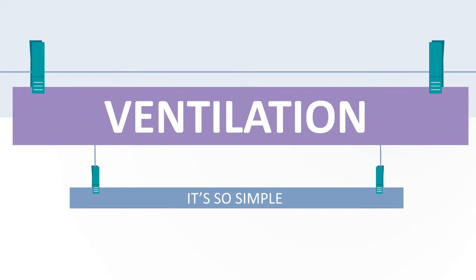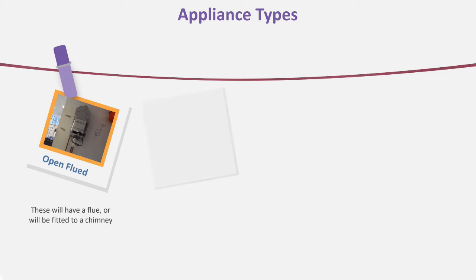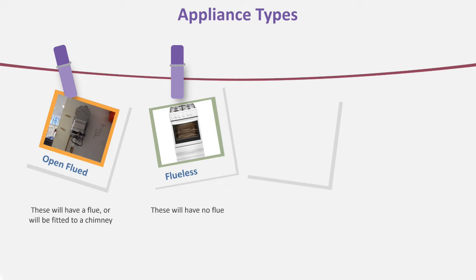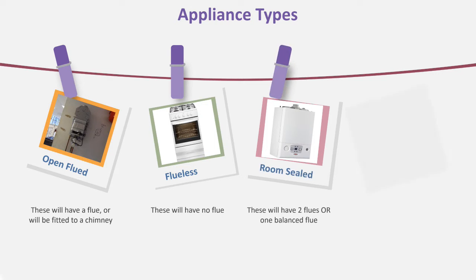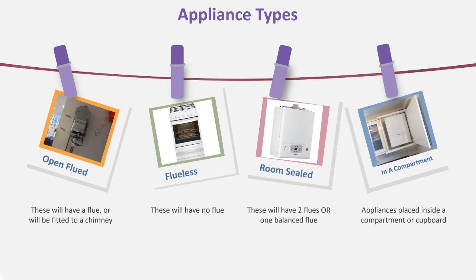In this video we're going to talk about ventilation and you're going to learn four basic steps to remember how to ventilate any appliance — it's a lot easier than you think. There are four types of appliance with regard to ventilation: the first type is open flued, the second type is flueless, the third type is room sealed, and lastly you've got appliances in a compartment. When you're looking to calculate the ventilation for any appliance, you must put it in one of these categories.